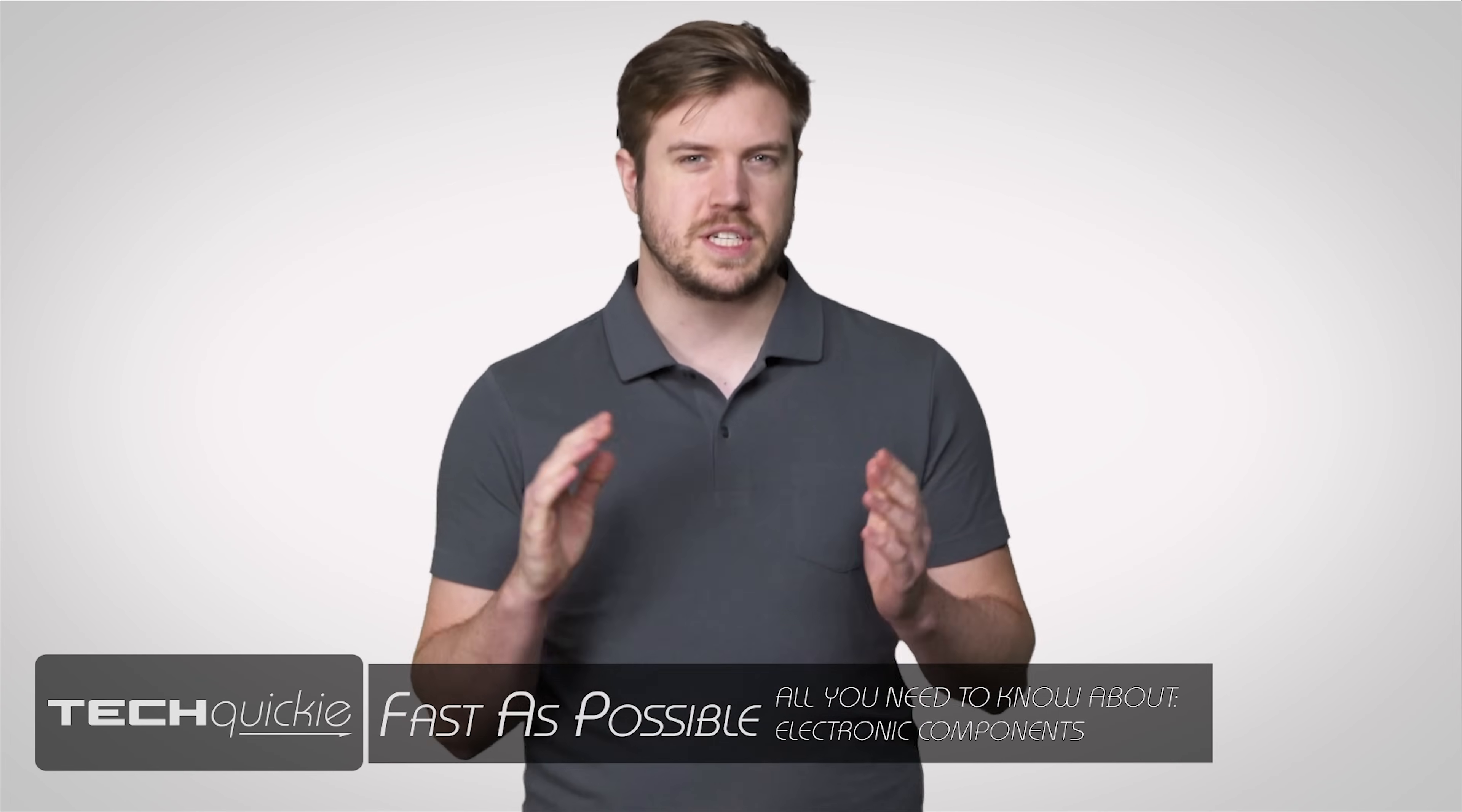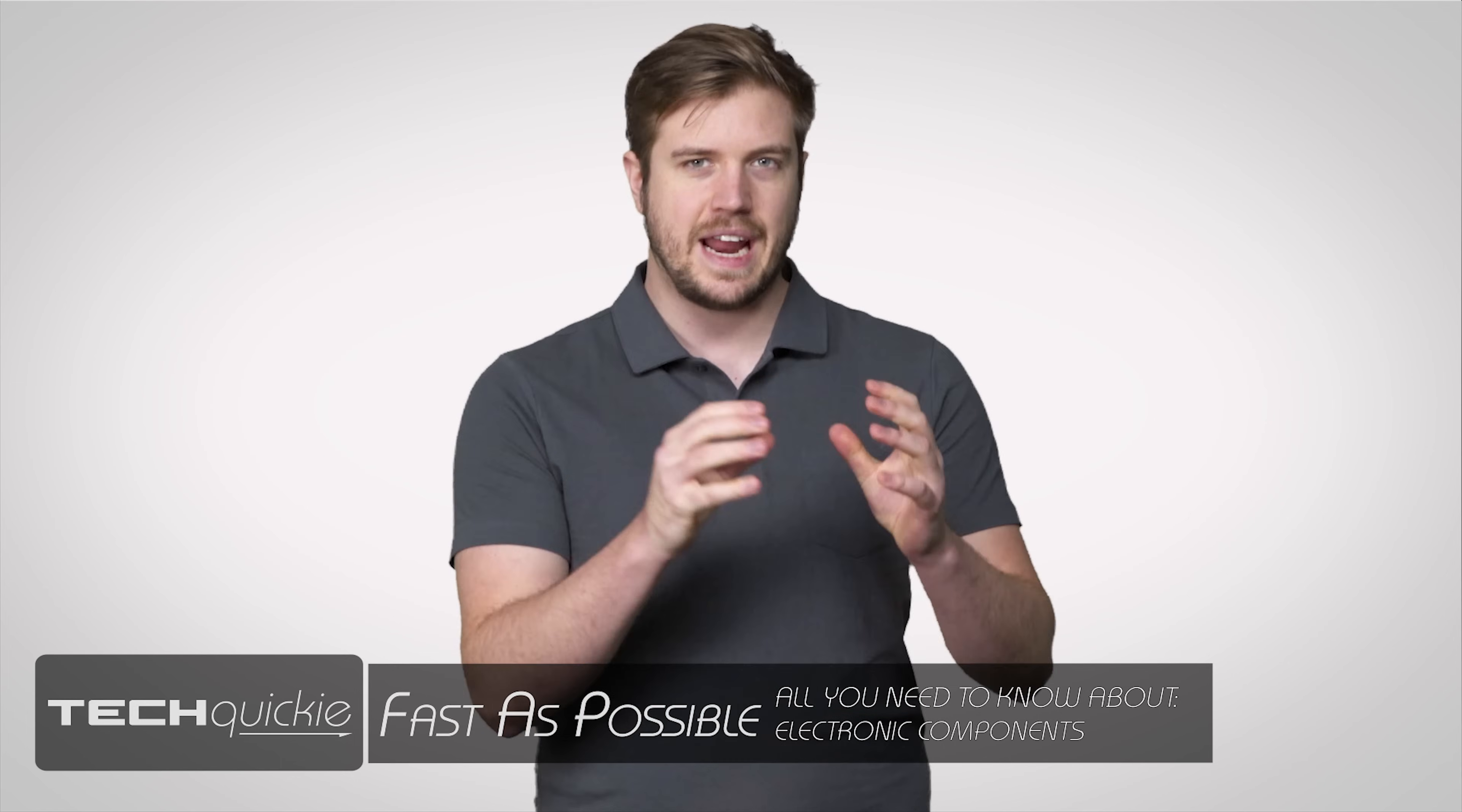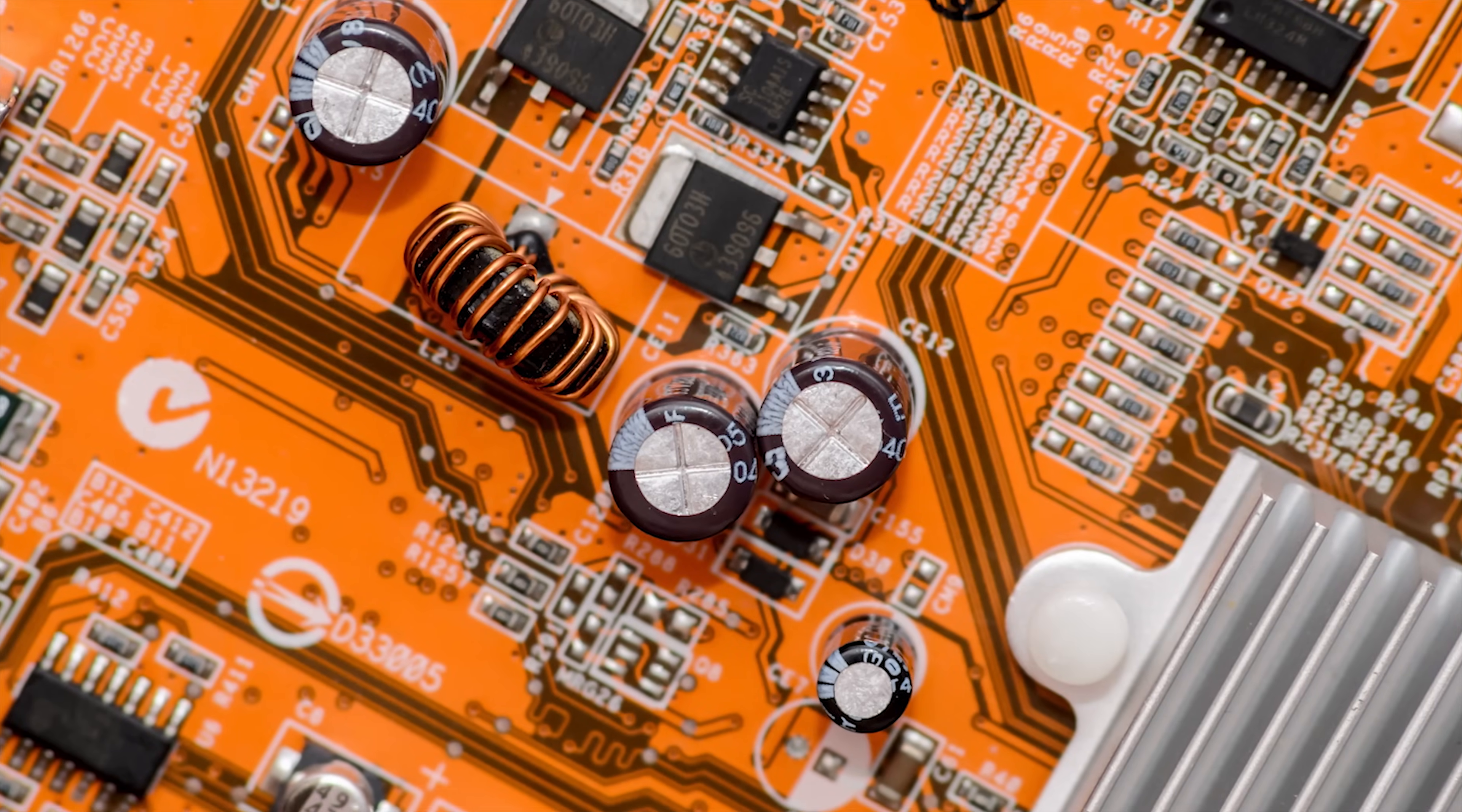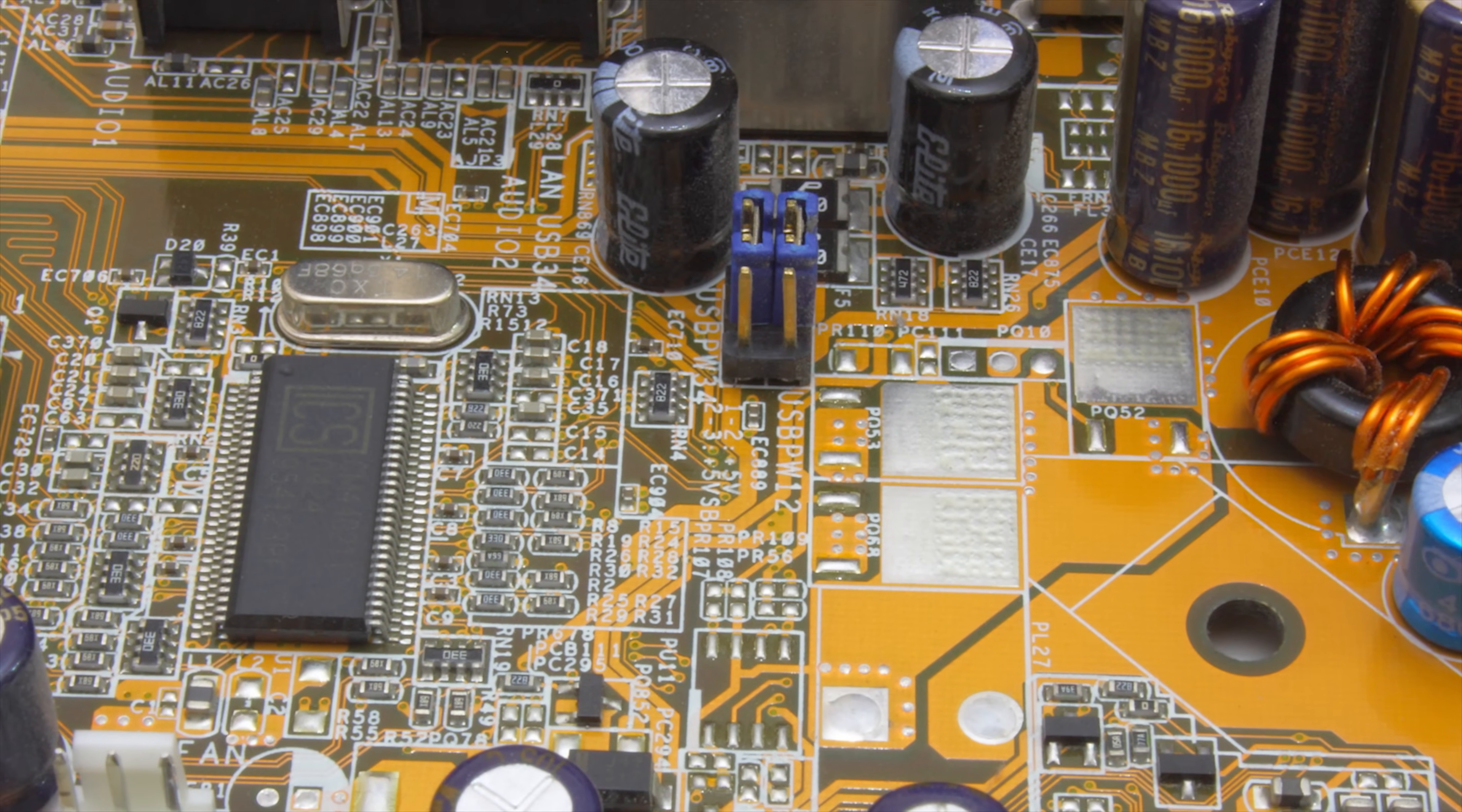If you're a seasoned PC builder or tinkerer, you can probably rattle off a few different connectors and headers on your motherboard in your sleep, especially if you dream about RGB heat sinks like I do. But what about all those other little tiny components? For instance, the capacitors and resistors that fill up all the extra space. What exactly do they do?